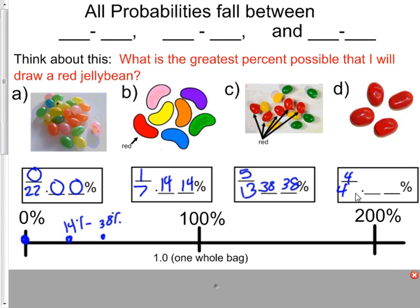4 out of 4 are red. If I do 4 divided by 4, I'm going to get 1.0 or one whole. If I multiply that by 100, move my decimal twice, that is 100 percent. So that would be right here.